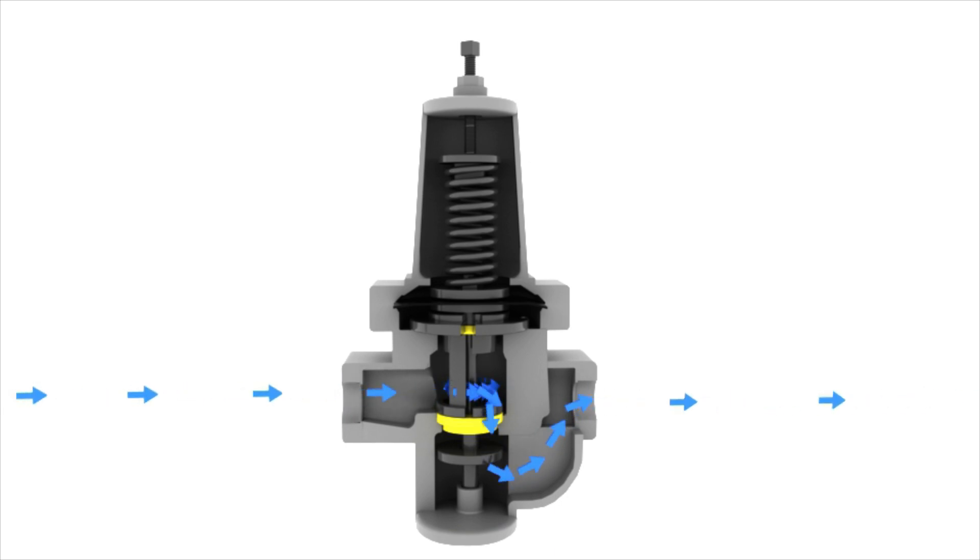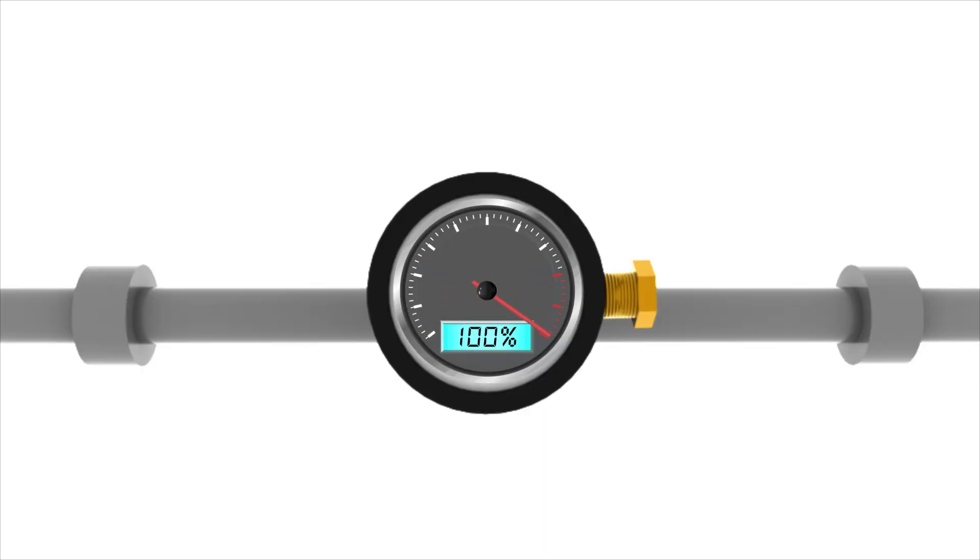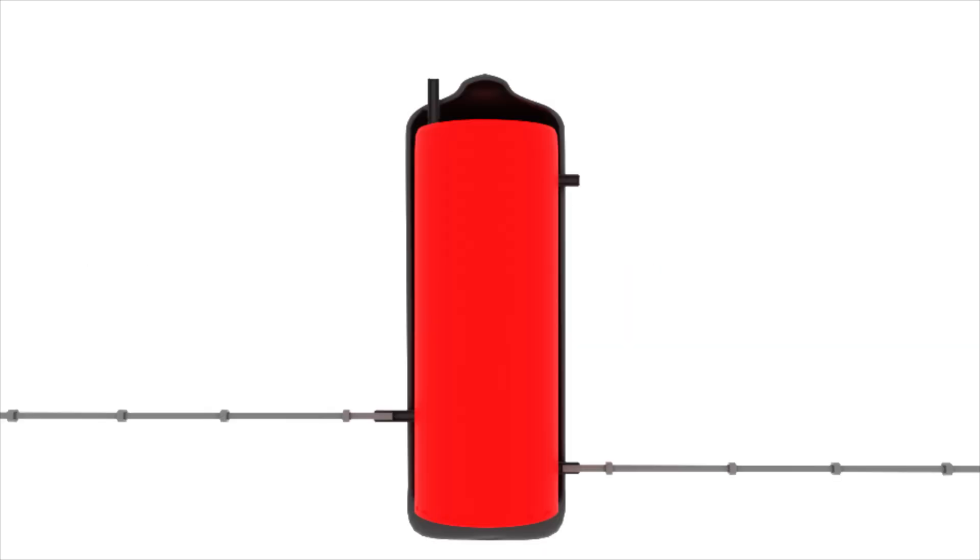Displacement purging is the replacement of the undesired gas by a purge gas without intermixing of the two. Dilution purging is the reduction in concentration of an undesired gas by the addition of a purge gas, like N2.